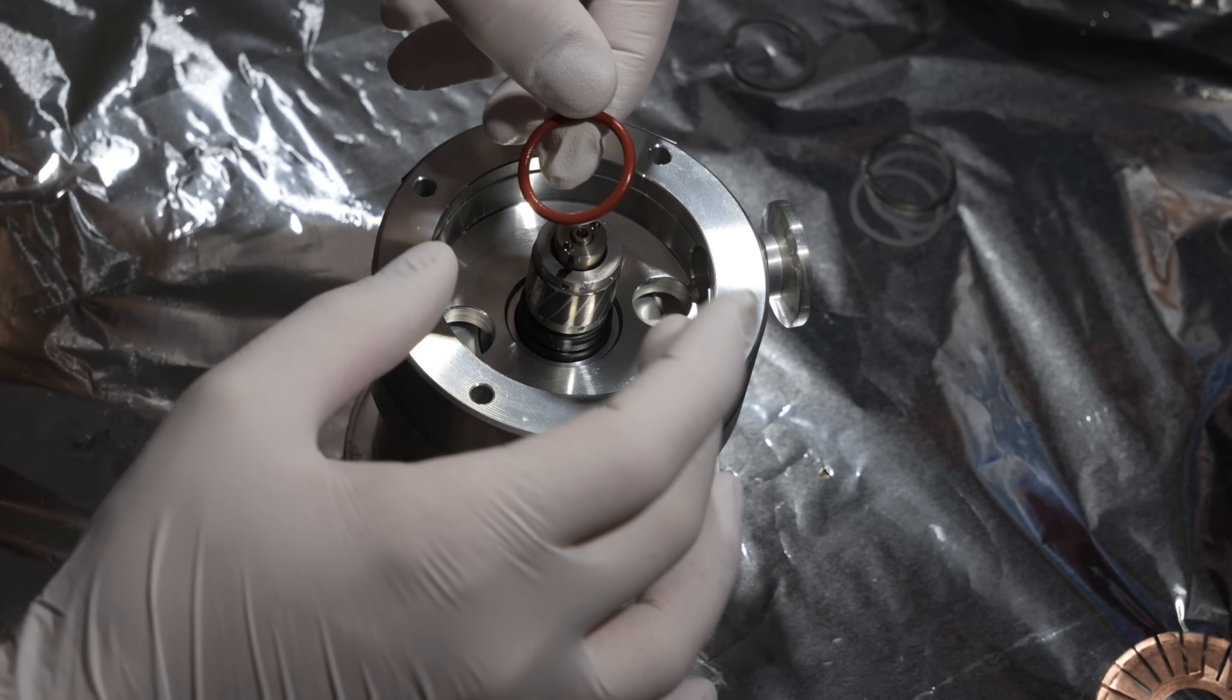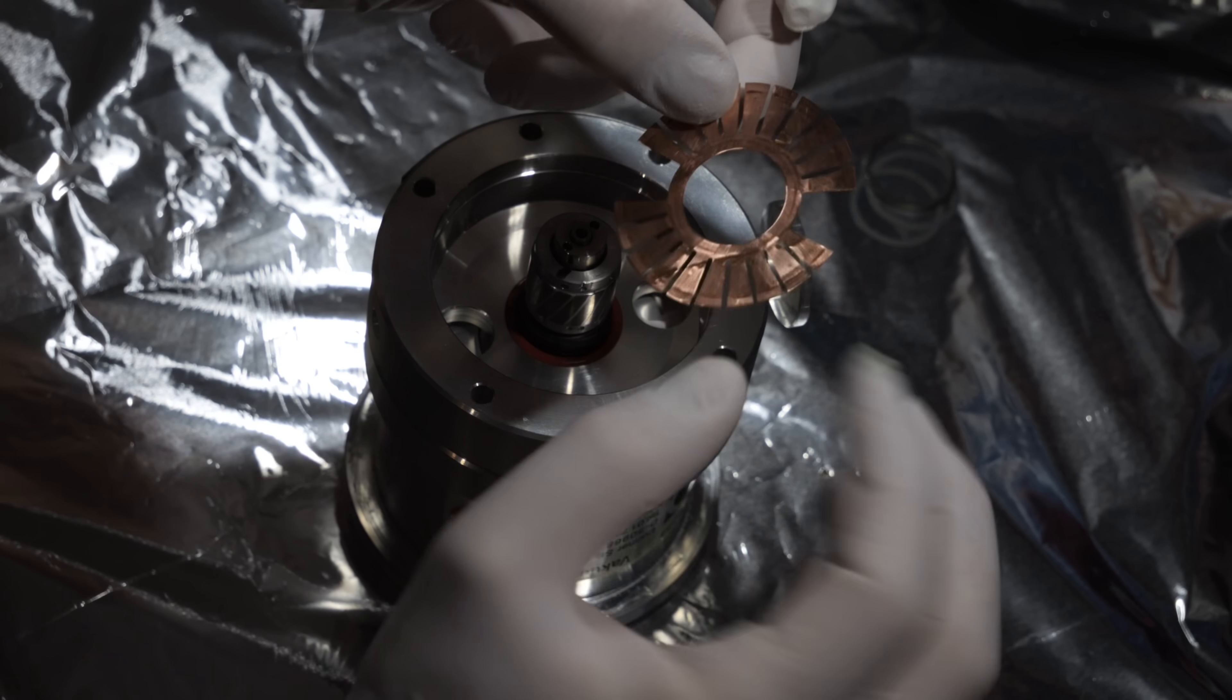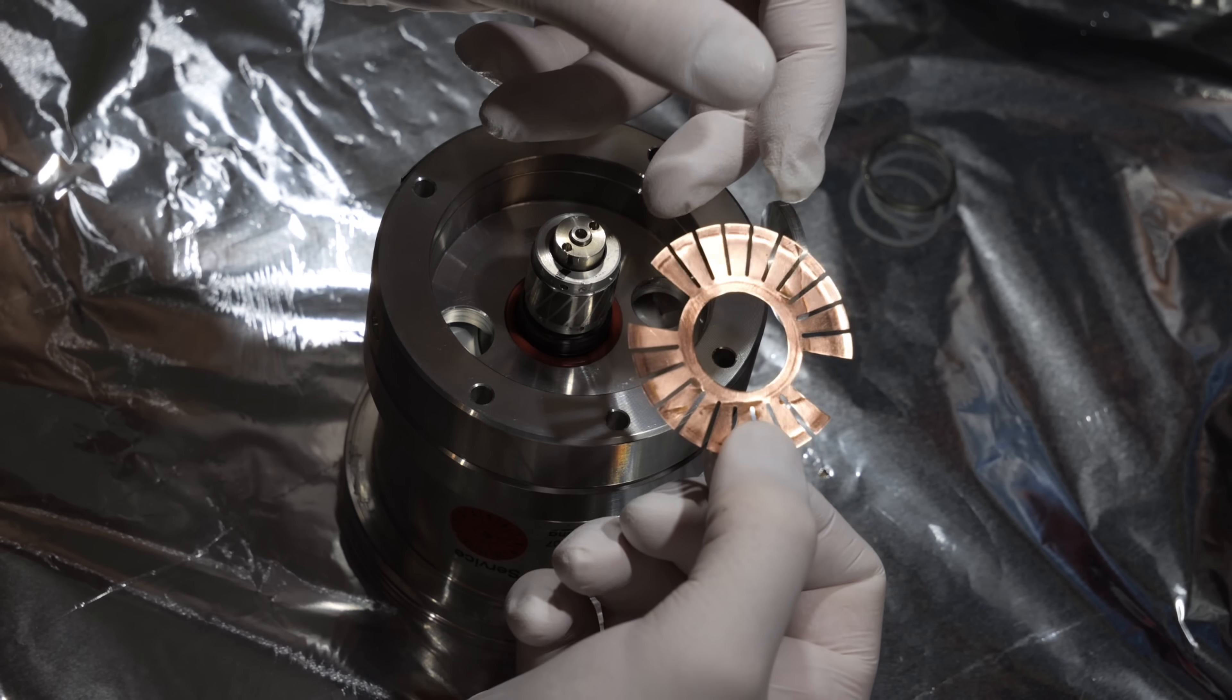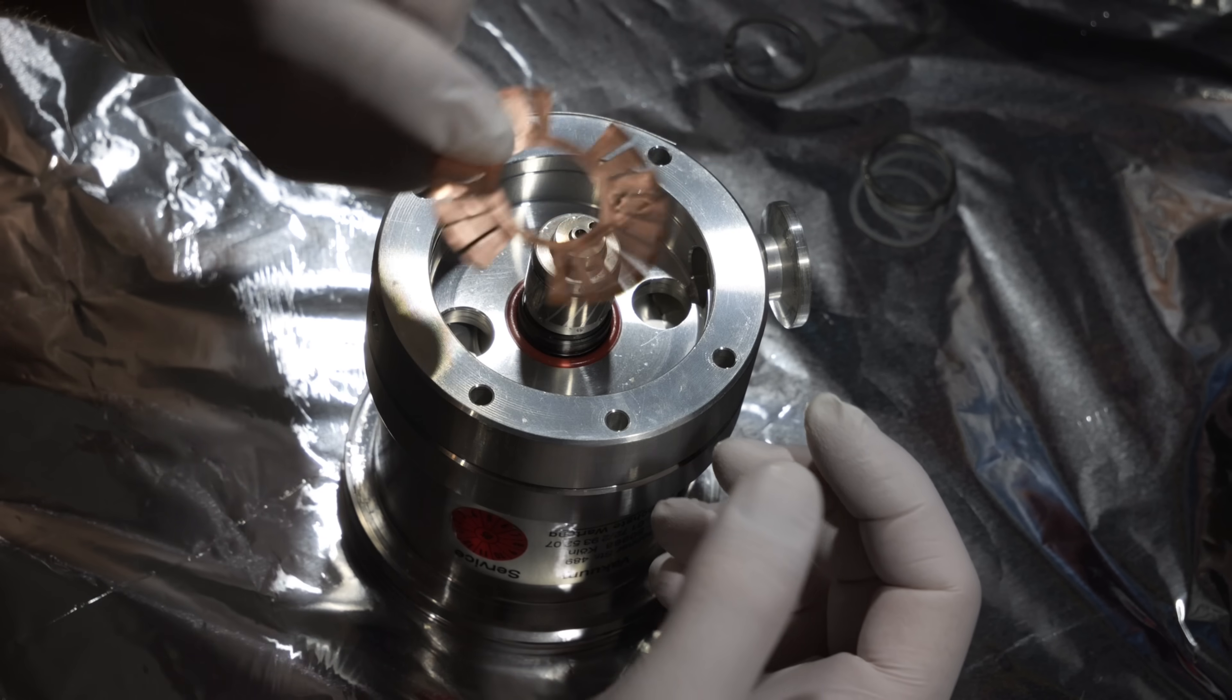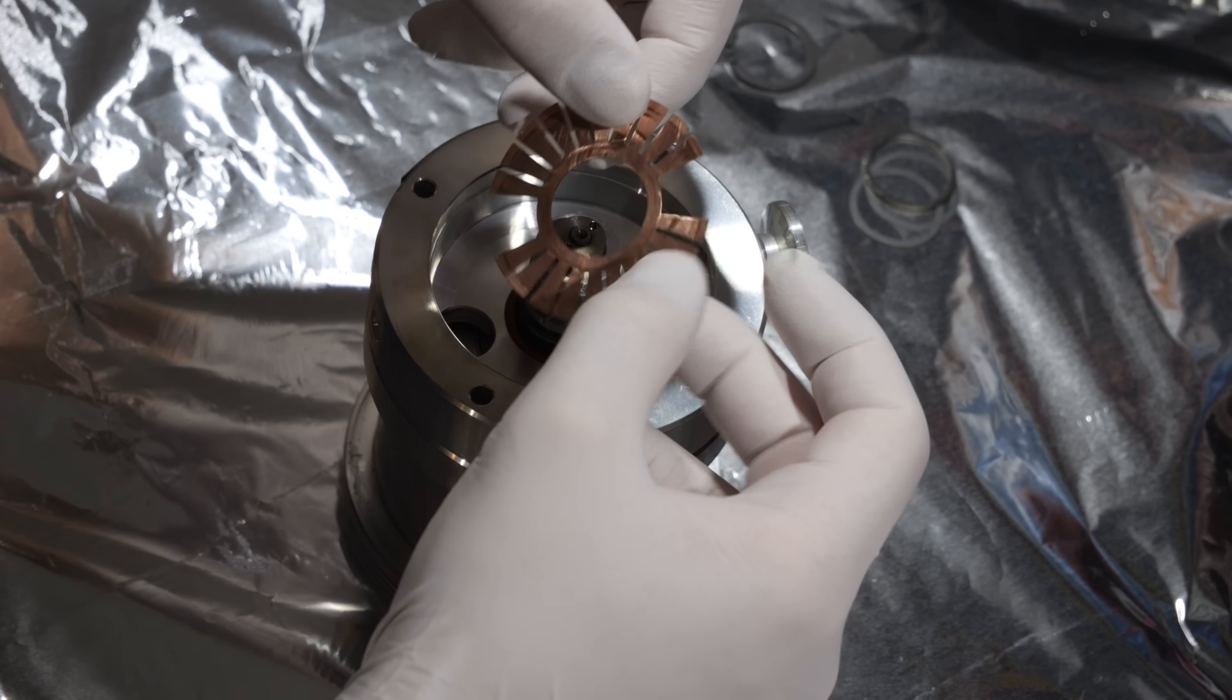Then there is another o-ring which sits down here around the shaft. Then comes this mysterious copper piece right here which I just cleaned. And as I've said if you know what this is let me know in the comments. I have no idea what it is used for.